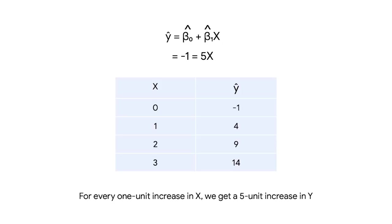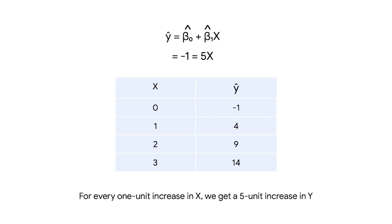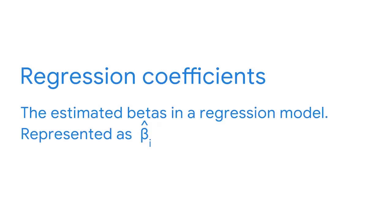Now let's input some values for X. If X equals 0, we get negative 1, which is the Y-intercept, or beta 0. If X equals 1, we get Y equals 4. If X equals 2, we get Y equals 9. If X equals 3, we get Y equals 14. A pattern emerges: for every 1 unit increase in X, we get a 5 unit increase in Y. Remembering our equation, 5 is our slope, or beta 1. The slope tells us how much Y increases for every 1 unit increase in X. These estimated betas are also called regression coefficients. Whenever you see the hat symbol, you'll know that you are estimating betas, also known as regression coefficients.